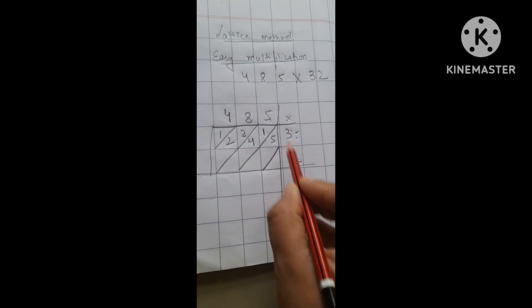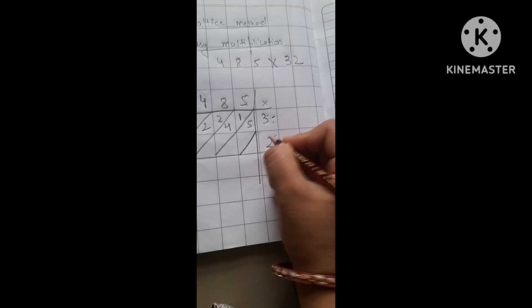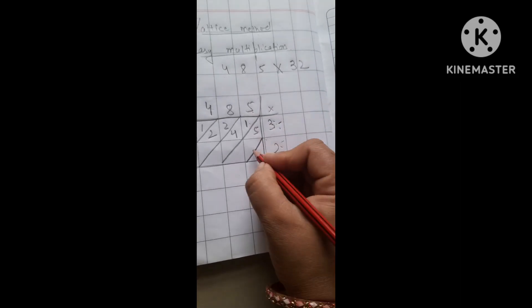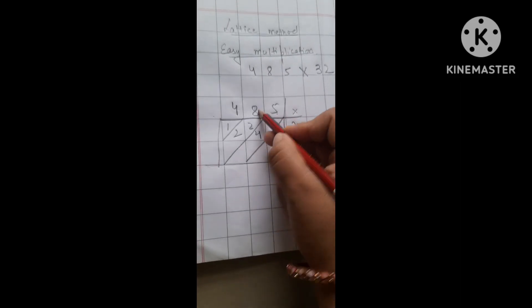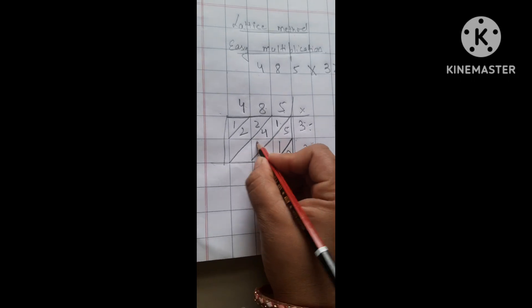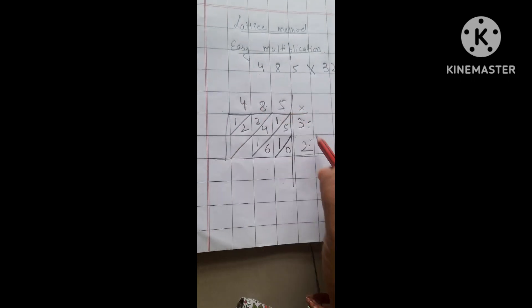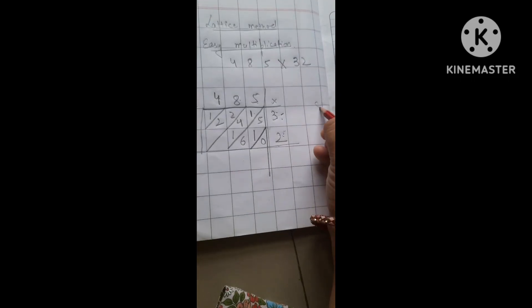Then, what are we going to do? Next, we will multiply all the digits by 2. So, 5 into 2, it comes out to be 10. 8 into 2 comes out to be 16. Look at this. Now, 4 into 2, it comes out to be 8.